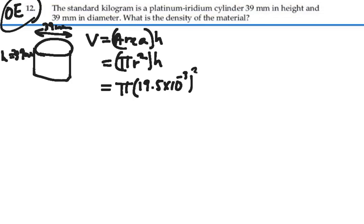We're going to have to square that. The height is 39 millimeters, 39 times 10 to minus 3 meters. And that will give us the volume of the cylinder. So we have pi times 19.5 squared millimeter squared times 39 times 10 to minus 3 meters.